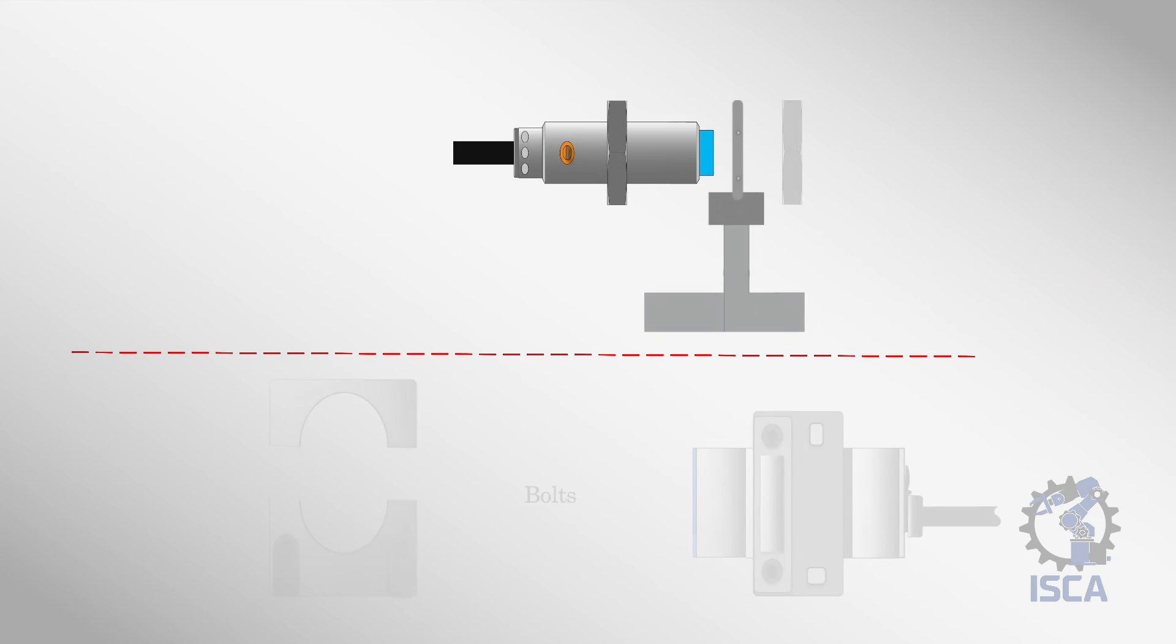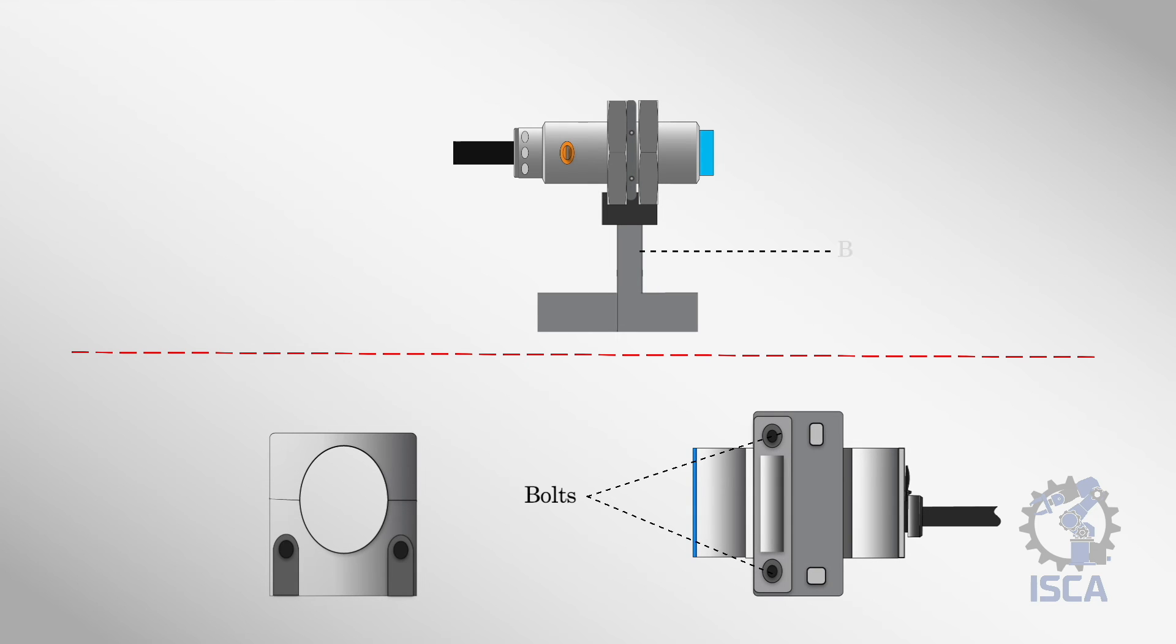Capacitive sensors can be bolted in place or mounted with a bracket. The sensing face must have line of sight to the target.